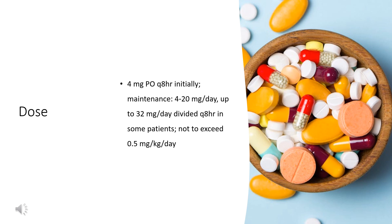For migraine headache prophylaxis (off-label), 2 mg PO Q12HR with or without propranolol. For decreased appetite secondary to chronic disease (off-label), 2 mg PO Q6HR for 1 week, then 4 mg PO Q6HR. For drug-induced sexual dysfunction (off-label), 4–12 mg PO 1–2 hours before anticipated coitus, or 1–16 mg per day. For serotonin syndrome (off-label), 12 mg initially PO, followed by 2 mg Q2HR, or 4–8 mg PO Q6HR as needed to control symptoms.